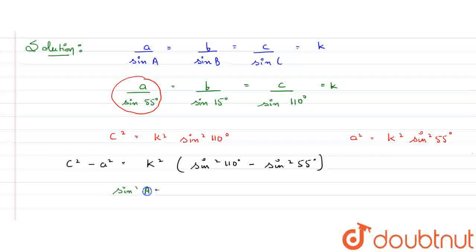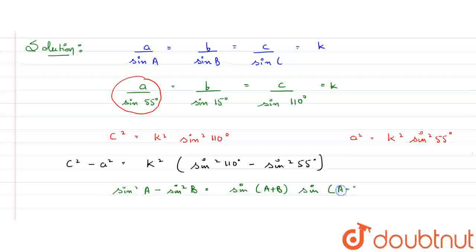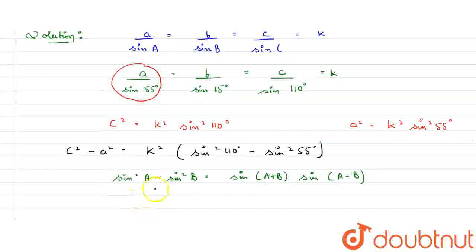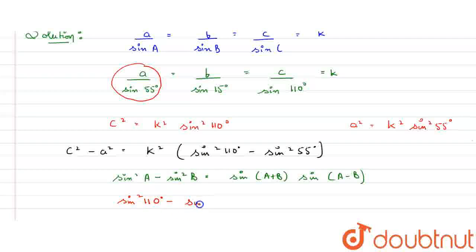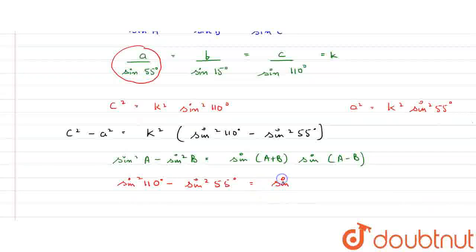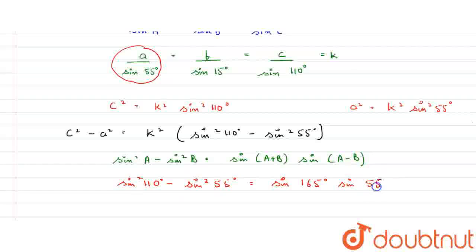We know the formula: sine squared A minus sine squared B equals sine(A+B) times sine(A-B). This is the formula we will use here. So in place of A I write 110 degrees, giving sine squared 110 degrees minus sine squared 55 degrees equals sine(110+55) times sine(110−55), which is sine 165 degrees times sine 55 degrees.